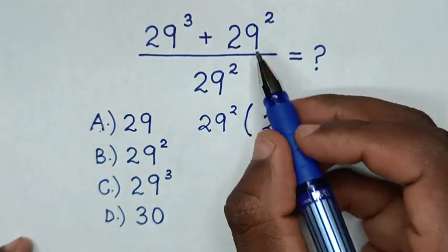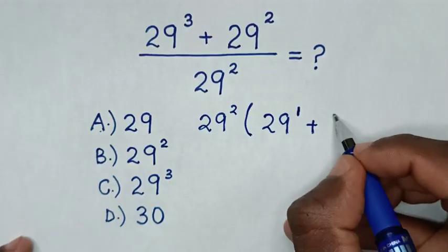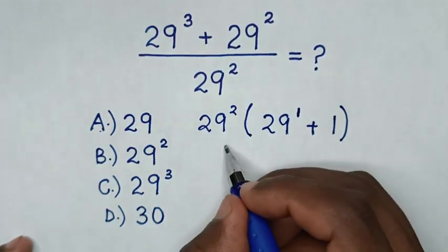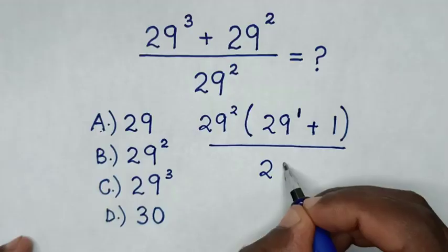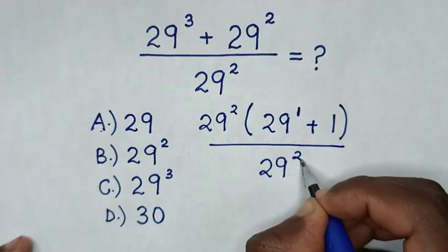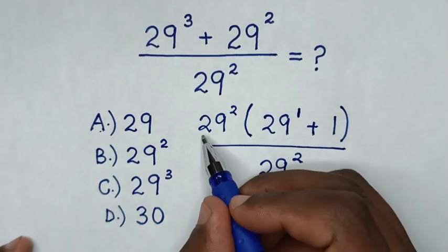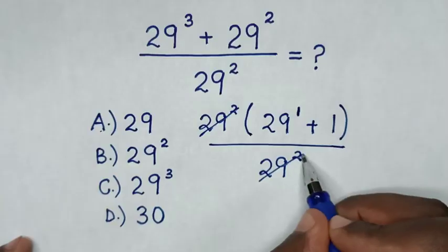Plus 29² divided by 29² is 1, in bracket, over this 29². Then, in the next step, to simplify, we cancel this 29² with the denominator 29².